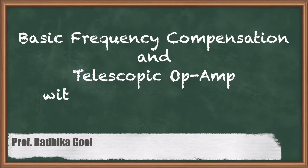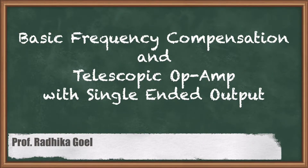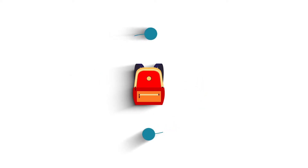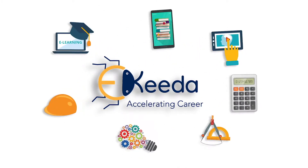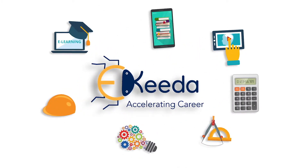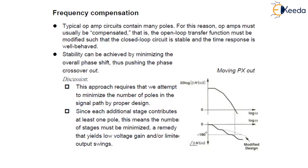Hello everyone. In this lecture, we will study about basic frequency compensation. As we have already seen, op-amp circuits contain many poles, and for this reason op-amps must be compensated — that is, their open loop transfer function must be modified so that the closed loop response is stable and well behaved.